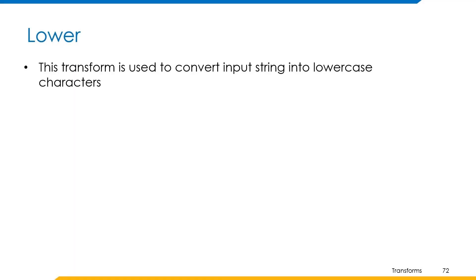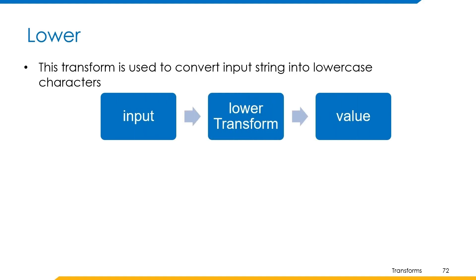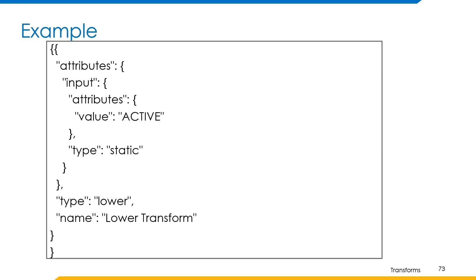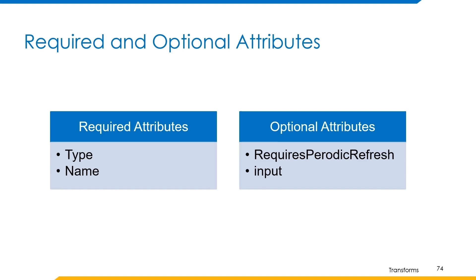Lower transform is used to convert an input string into lowercase characters. For example, input string ACTIVE in capital letters is given to the lower transform and it returns the output in lowercase letters as active. The example can be built where the name is lower transform and type is lower. The required attributes are type and name. The optional attributes are requires periodic refresh and input.